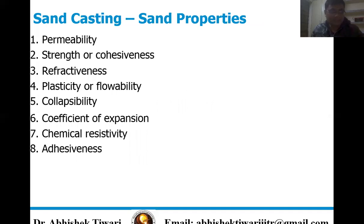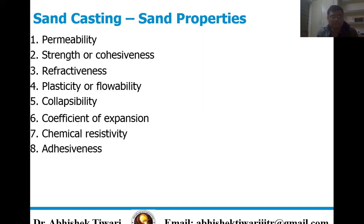Now we are going to discuss sand casting. We will discuss the sand properties required. First is permeability — this property allows gases to escape easily from the mold. Higher the silt content of the sand, lower the permeability. If the mold is rammed too hard, its permeability will decrease. Second property is strength and cohesiveness — defined as the property of holding together of sand grains. A molding sand should have ample strength so that the mold does not collapse.